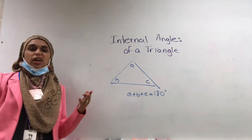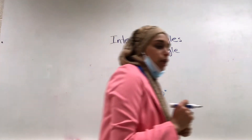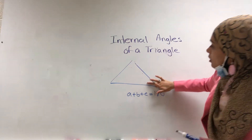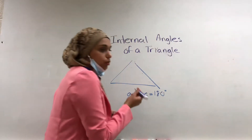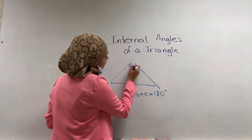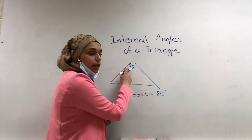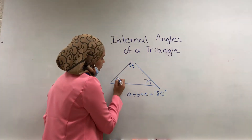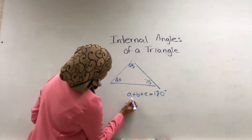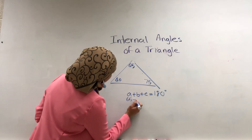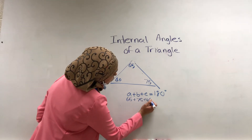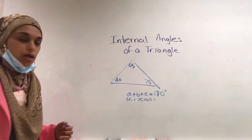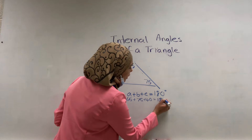Now let's try this — let's put some numbers in here and see if we actually end up with that answer. I'm going to say angle A equals 65, and we have 75 and 40. So 65 plus 75 plus 40 — when you add those up, you end up with 180 degrees.